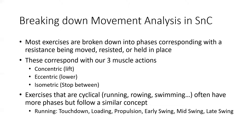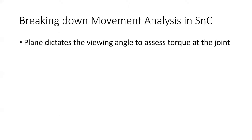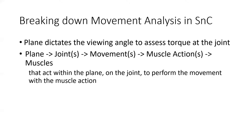Today we're just going to work on traditional biphasic exercises that have the concentric and eccentric portion. We start to look at how we are going to assess the torque demands on the joint — which joints are involved and how much torque is being placed on that joint, which determines how much muscle recruitment we need to perform that movement. The plane dictates the viewing angle: sagittal plane movements are viewed from the side, frontal plane from the front or back, and transverse plane movements from a diagonal or top-down view.